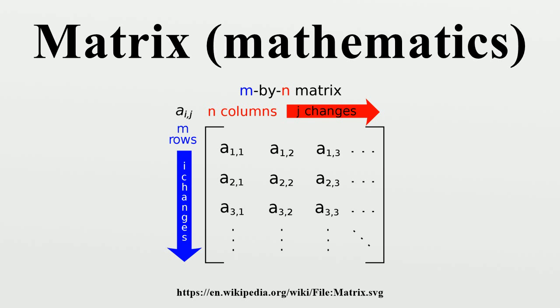Infinite matrices occur in planetary theory and in atomic theory. A simple example of an infinite matrix is the matrix representing the derivative operator, which acts on the Taylor series of a function.